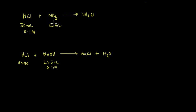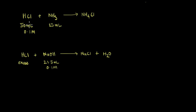So how can we find the number of moles of ammonia consumed? We know that the mole ratio of HCl to NH3 is 1:1 because this is a balanced reaction, so the number of moles of ammonia consumed will equal the number of moles of HCl consumed. But we don't know how much HCl was consumed — we only know the starting number of moles. So we can use the second reaction to find that.